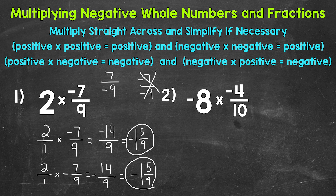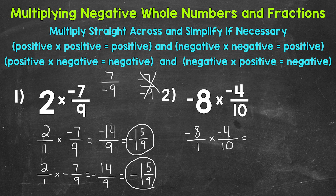Let's move on to number two, where we have negative eight times negative four tenths. We have a negative times a negative, so we know we are going to have a positive result. Let's multiply straight across — we'll put negative eight over one so we have a numerator and a denominator, and bring down negative four tenths. Negative eight times negative four gives us a positive 32.